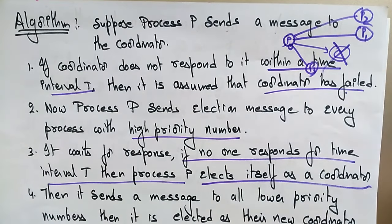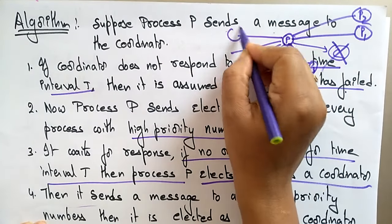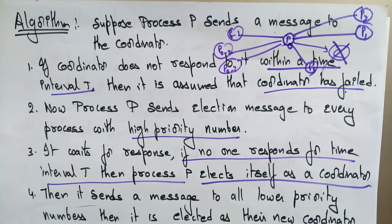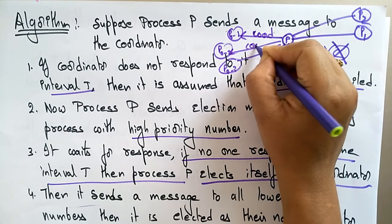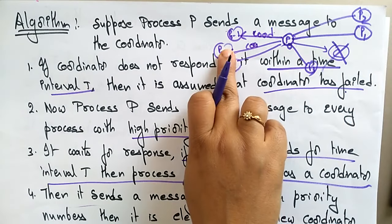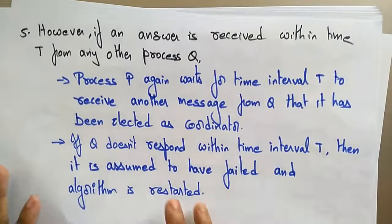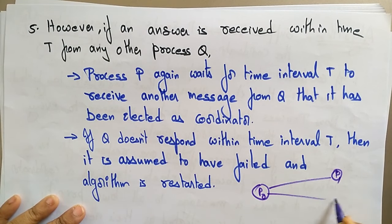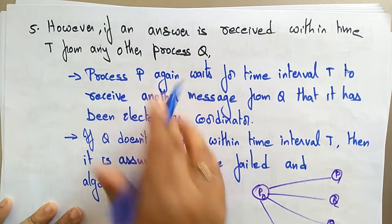If no processor responds within the time interval, P elects itself as coordinator and sends a message to all lower-priority processes — P-1, P-2, P-3 and so on — saying "I am the new coordinator." However, if P does receive a response within time T — say from processes P1, P2, or P3 while P5 is crashed — the flow continues differently.